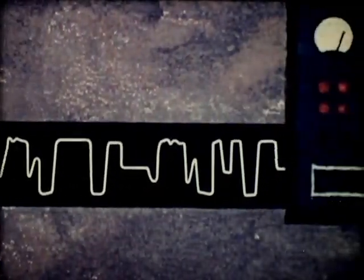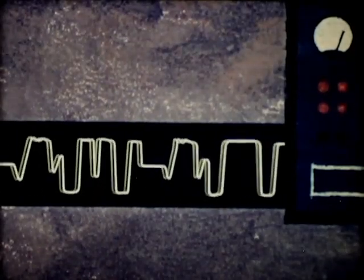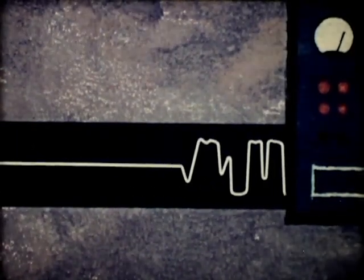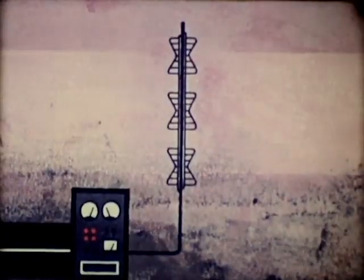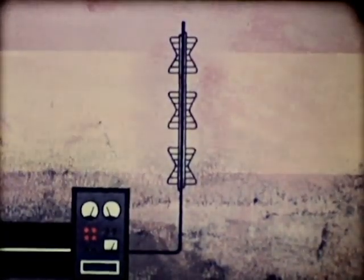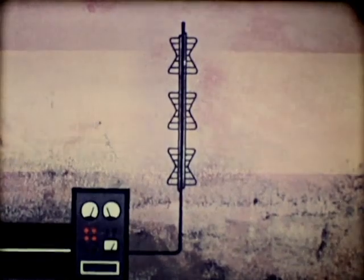Let us first consider a situation in which there is no picture signal. In this case, the transmitter emits a constant carrier wave. Here, the wave pattern is not shown since the wavelength is relatively short. If there is a picture signal, the carrier wave is modulated.